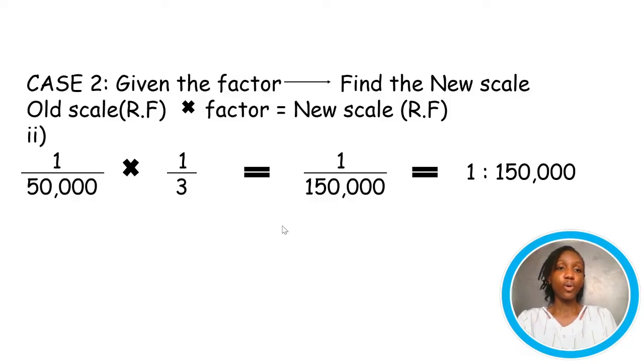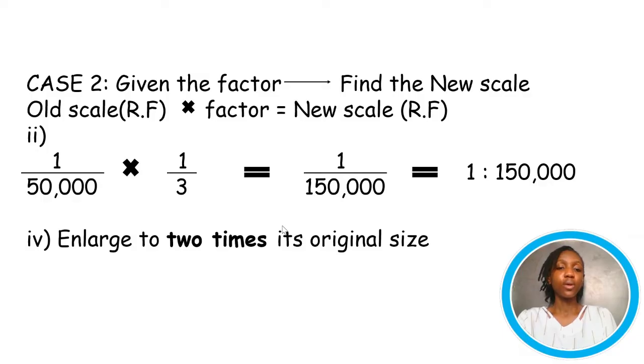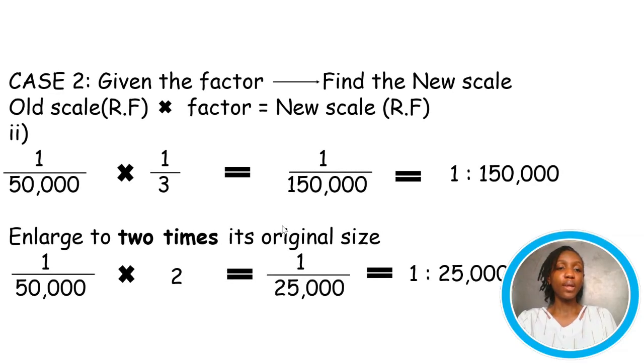Now, let's take one more instance in relation to case 2. Enlarge the original map 2 times to its original scale. So, now the factor is 2. Multiplying the old scale by this factor of 2, we have 1 over 25,000, which is the same as 1 ratio 25,000. The moment you understand the concept very well, you don't need to waste time calculating unless you just want to cross-check because usually in exam you'll be given small numbers, factors of 2, 3, half and 1 over 3.